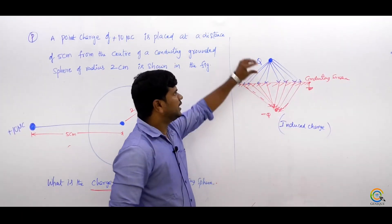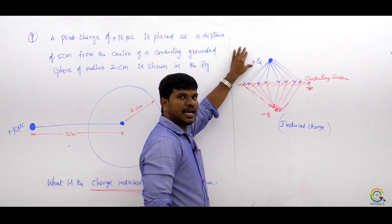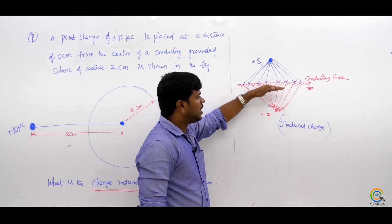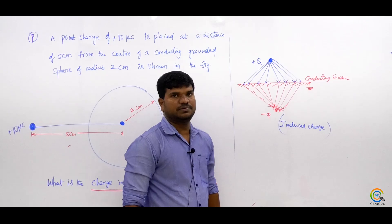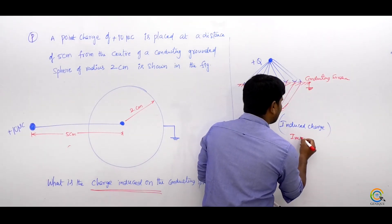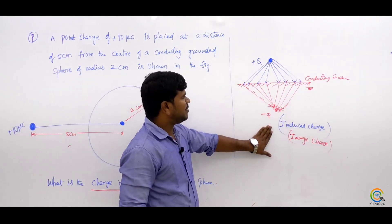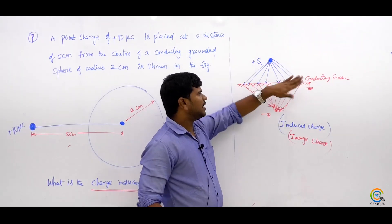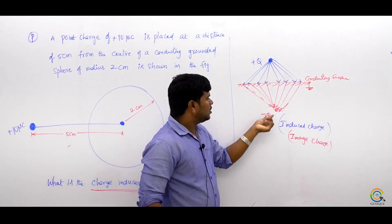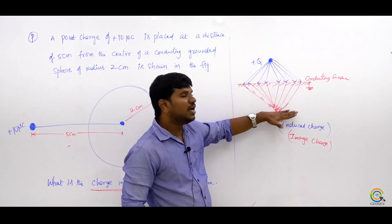If you take any kind of charge — it may be a point charge, a line charge, or a sheet charge — near to the conducting surface, there will be one charge induced. This charge is called the induced charge, also called the image charge.